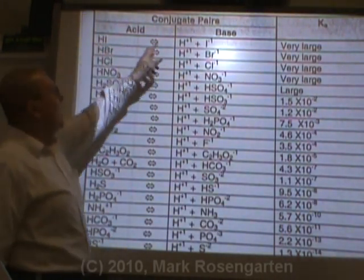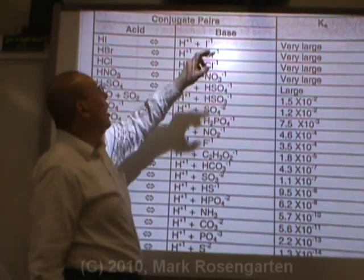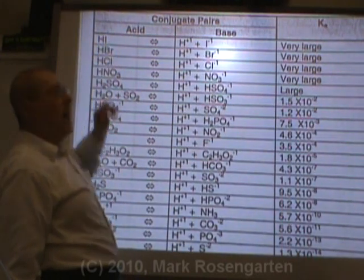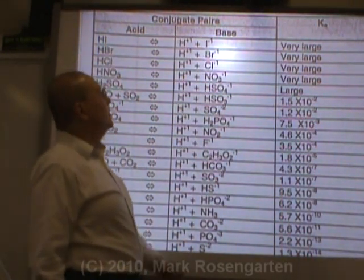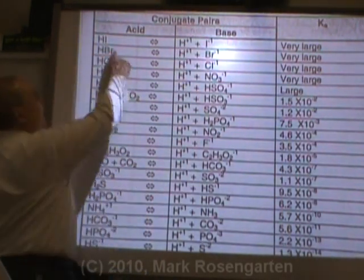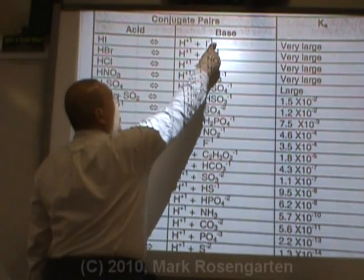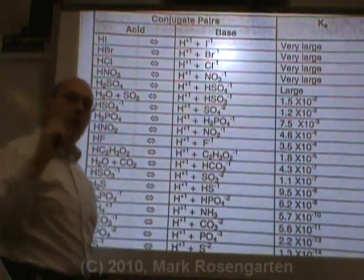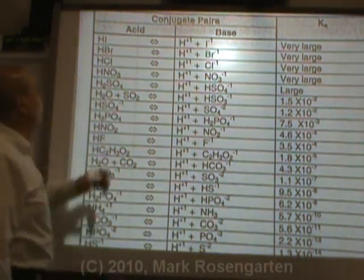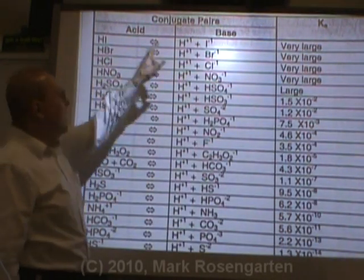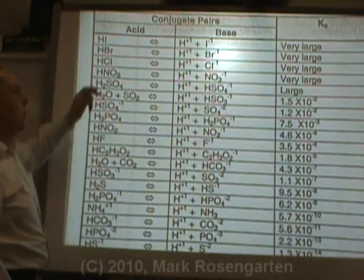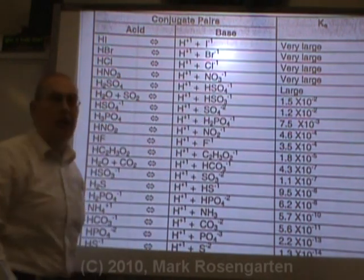When an acid loses a hydrogen, it becomes a base — we call that a conjugate base, because it's the base formed specifically when that acid loses a hydrogen. You could also say that when I- gains a hydrogen, it forms the acid HI — we call HI the conjugate acid of I-. They differ by only one hydrogen, only one H+, only one proton. So the conjugate base of HNO3 is NO3-, and the conjugate acid of NO3- is HNO3. They're inextricably linked as conjugate pairs.